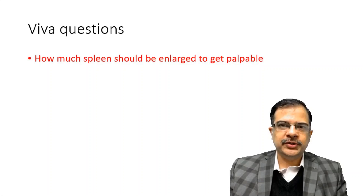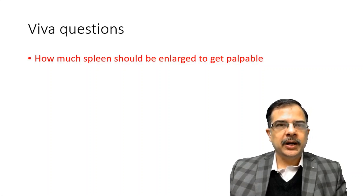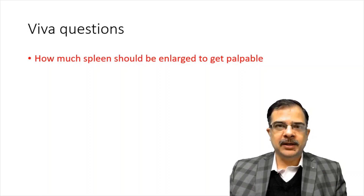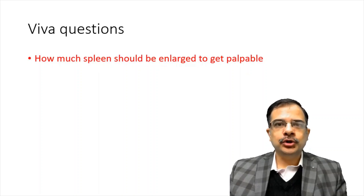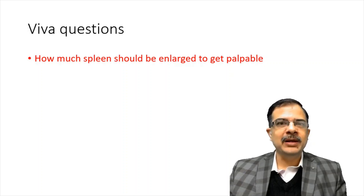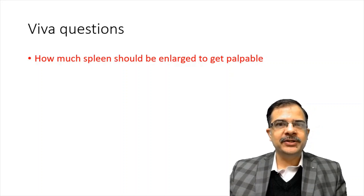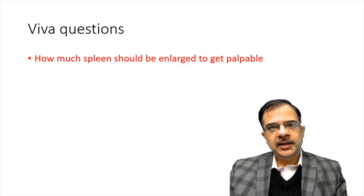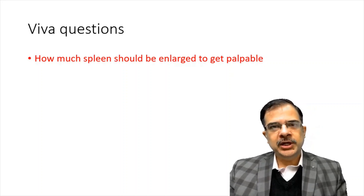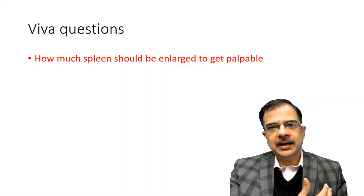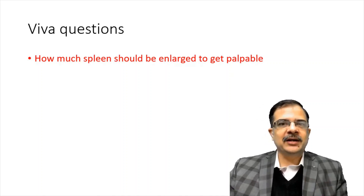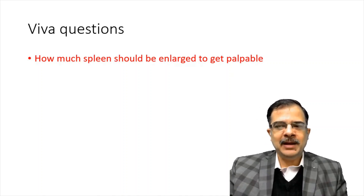Some important viva questions. How much should the spleen be enlarged to get palpable? The answer is it should be at least two to three times its normal size to be palpable. So even a spleen tip that is palpable means it is enlarged. The reason is the spleen usually enlarges in the posterior direction first, then comes anteriorly and will then be palpable.